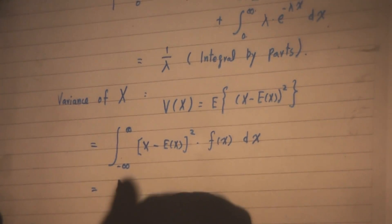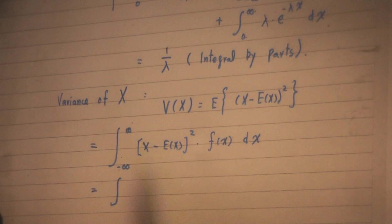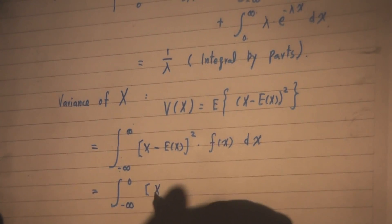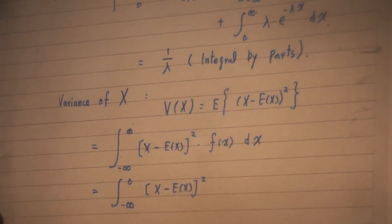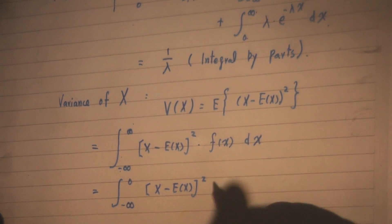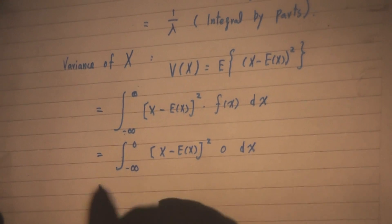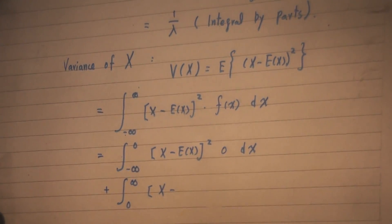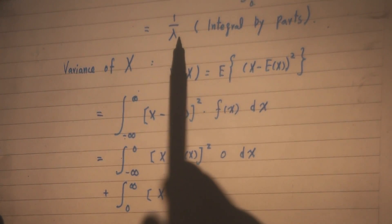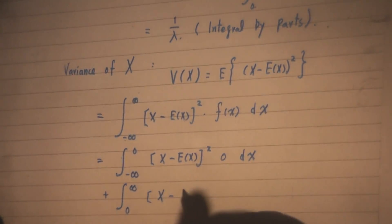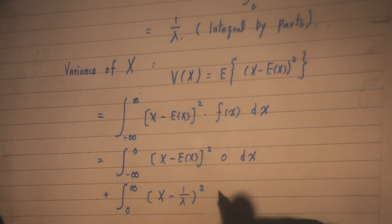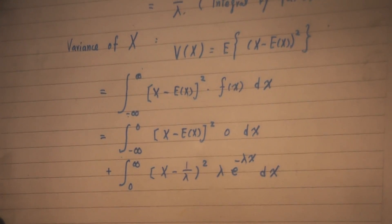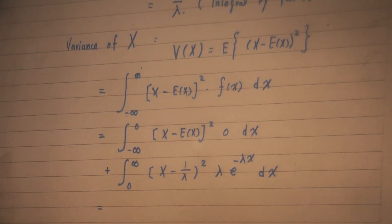Again, from negative infinity to 0, f of x equals 0, so we can omit that term. That leaves us with the integral from 0 to positive infinity of (x minus E[x]) squared. What's E[x]? Well, we just evaluated it — the expected value of an exponential random variable is 1 over lambda. And you square the term, times lambda times e to the power of minus lambda x dx. This integration is not difficult at all, and I have no intention to teach calculus here.